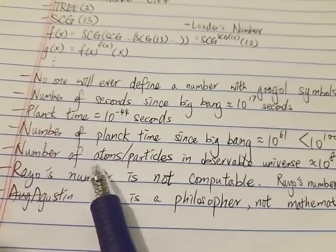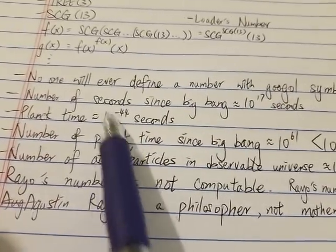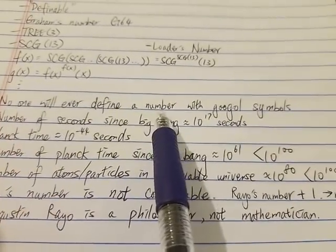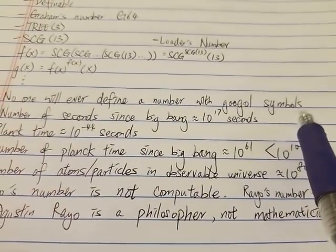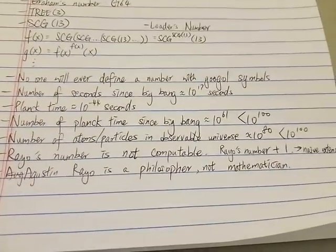So in other words, no one will ever define a number or a function that has a googol number of symbols.